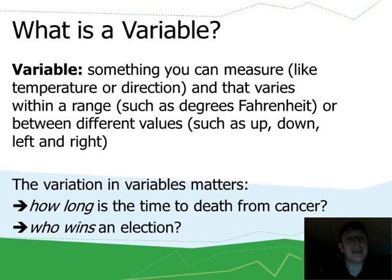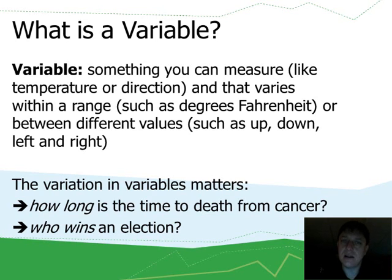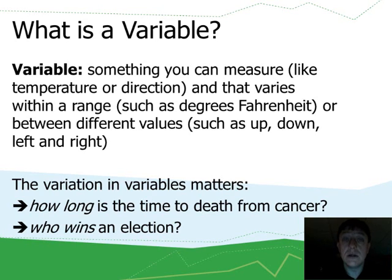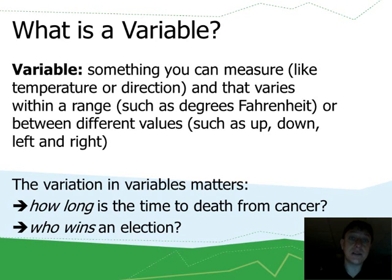The variation in variables matters if you're interested in outcomes. For instance, if you're studying cancer, one of the classic questions is: how long have I got, doc? How long is the time to death when cancer is diagnosed? Is it no more different than what you would expect for someone else without a cancer diagnosis, or is your life shortened? Who wins an election? We had an election day this month in November 2012 — someone was elected president. That's something you may want to predict if you're interested in politics.